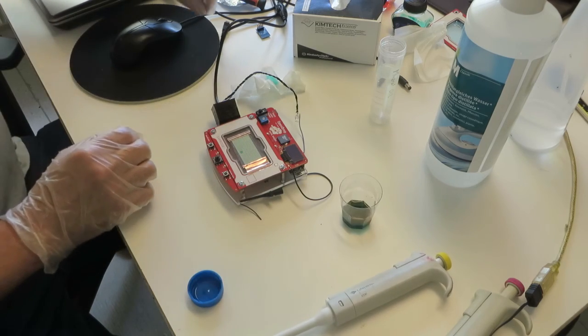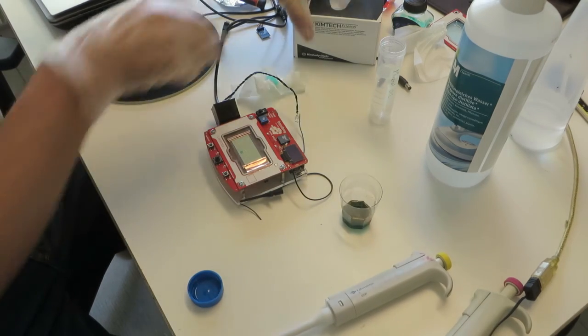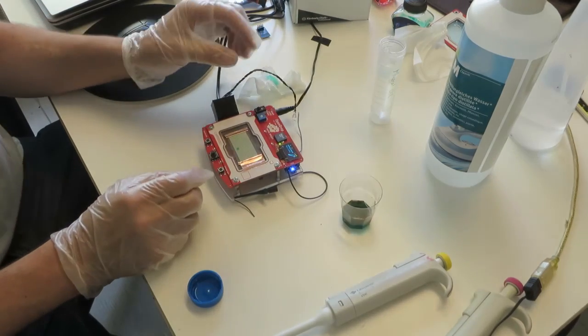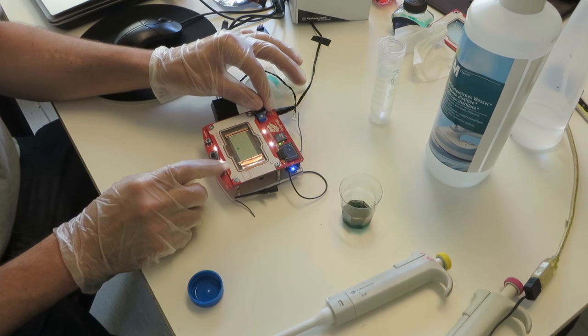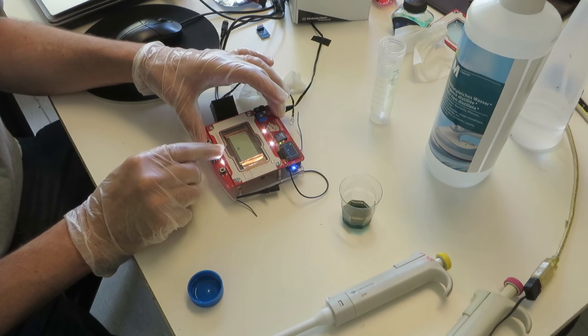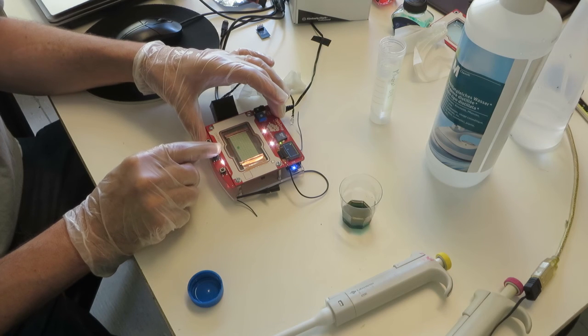Now power the device and turn on the high voltage. With the little joystick I can now move around the droplets and test the coating. As you can see the droplet is moving.